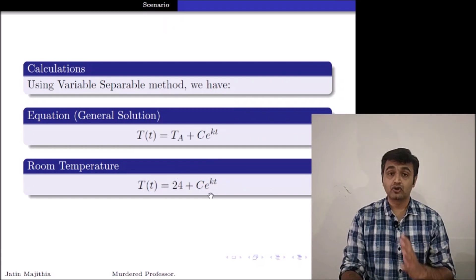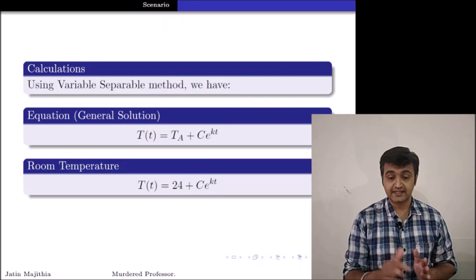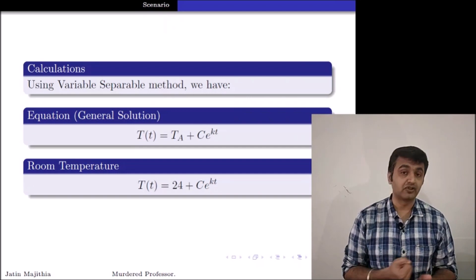Now, what is T suffix A? I know it is nothing but the room temperature. And the room temperature was 24 degrees Celsius. So I put the value of T of A as 24 degree. Now, what are the unknown constants? If you see over here, the unknown constants are K and C.